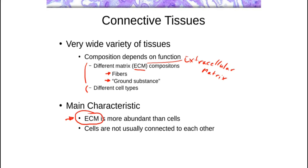The cells in connective tissue are not usually connected to one another. As you may remember from epithelium, cells were connected in sheets. Muscle cells are also connected to one another. That is one of the things that really separates them from connective tissues. In connective tissue, the cells are not necessarily connected to each other — they can be quite far apart. The extracellular matrix is the main component, and its composition — the ratios of fibers to ground substance and the types of fibers — determines the functions these tissues can perform.